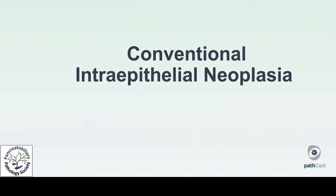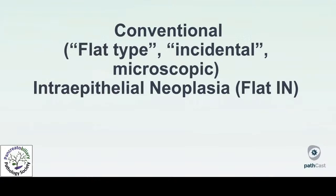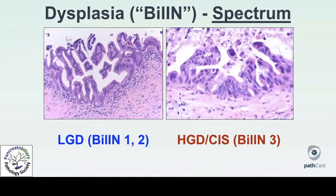Let's start with conventional intraepithelial neoplasia — the flat type, incidental types of dysplasia, meaning things we encounter microscopically in specimens removed typically for other reasons, which we also call intraepithelial neoplasia. These conventional types are also referred to as flat type because we distinguish these from the more tumoral types. The term 'BilIN' was proposed for these lesions, although dysplasia is still more commonly used. There's a spectrum of dysplastic changes, and we increasingly move towards a two-tiered system: low-grade versus high-grade.